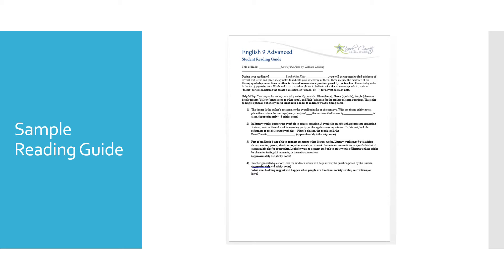For symbols, a symbol is an object that represents something else — like white meaning purity or an apple meaning wisdom. In Lord of the Flies, students are going to look for these symbols: Piggy's glasses, the conch shell, and the beast or beastie. Any time you see quotes in which those particular symbols are mentioned, put a sticky note on those quotations and label them — 'symbol, Piggy's glasses,' 'symbol, conch shell,' 'symbol, beast.'